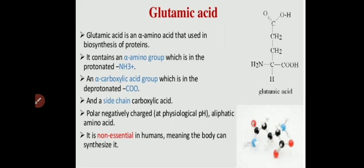Glutamic acid is an alpha amino acid that is used in the biosynthesis of protein. As mentioned earlier, glutamic acid was the first amino acid to be produced industrially, and it was produced using Corynebacterium glutamicum.